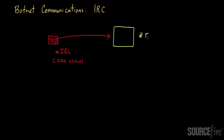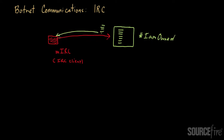The bot would join something like the 'I am owned' channel. The bot connects to this channel and is then receiving commands via it. The bot master can put in commands as part of the channel — anybody listening will see these commands streaming across their console, and these commands get propagated back to the bot, which then carries out whatever nefarious deed the bot master wanted.